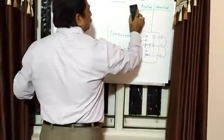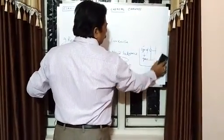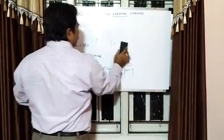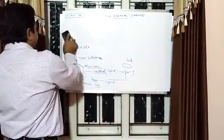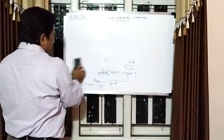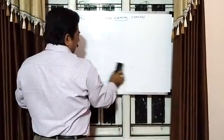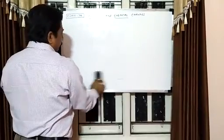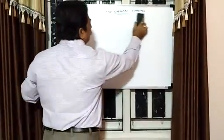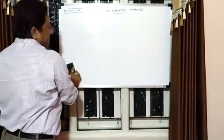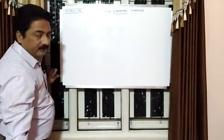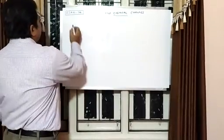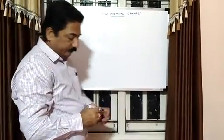I hope you do this exercise at home on a daily routine to understand what changes happen in daily life — what is physical change and what is chemical change. As per our seventh class chapter, this is our first chapter. Now we have to go for some chemical symbolic forms.